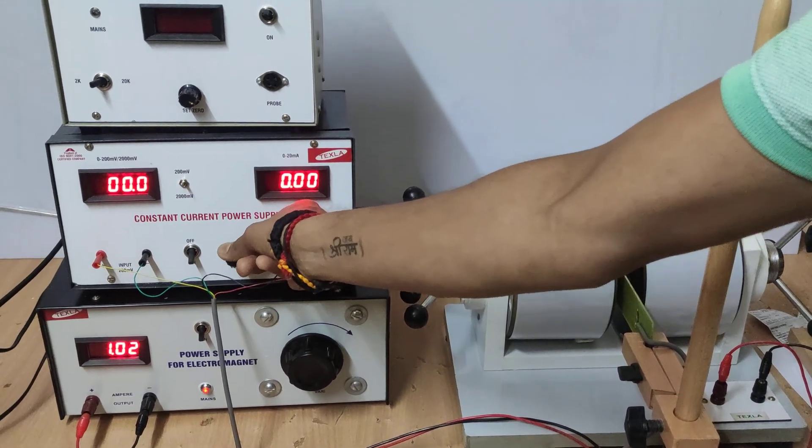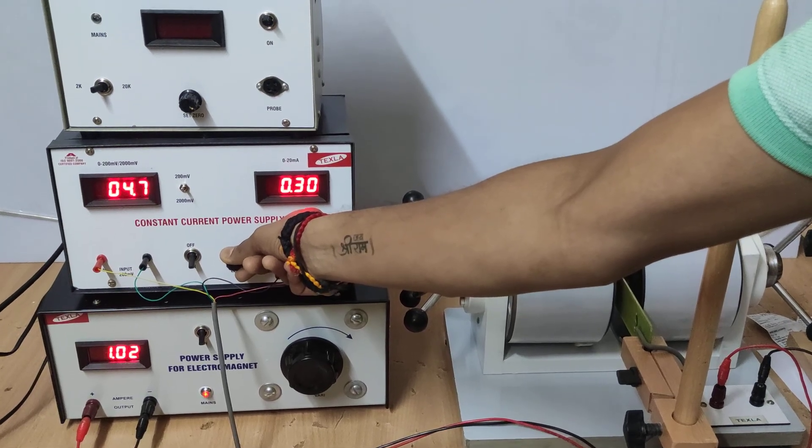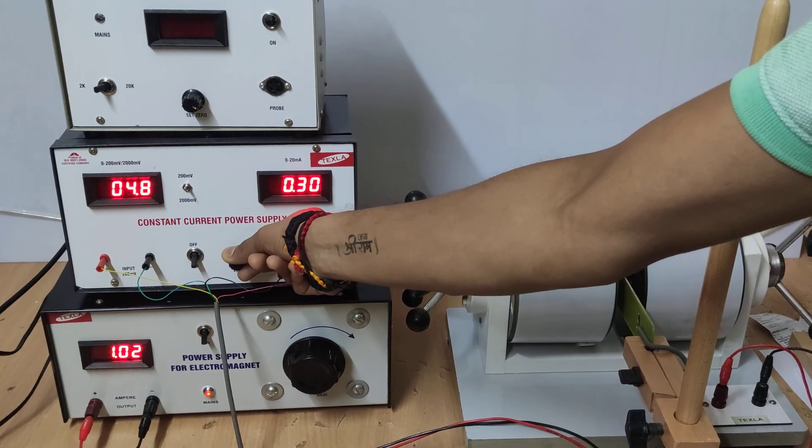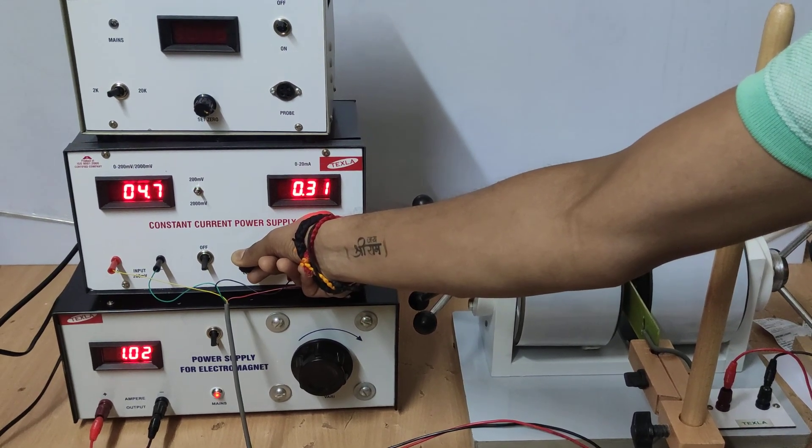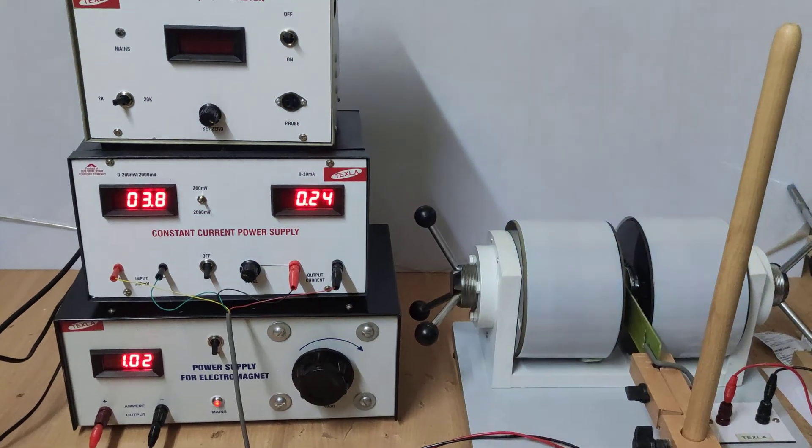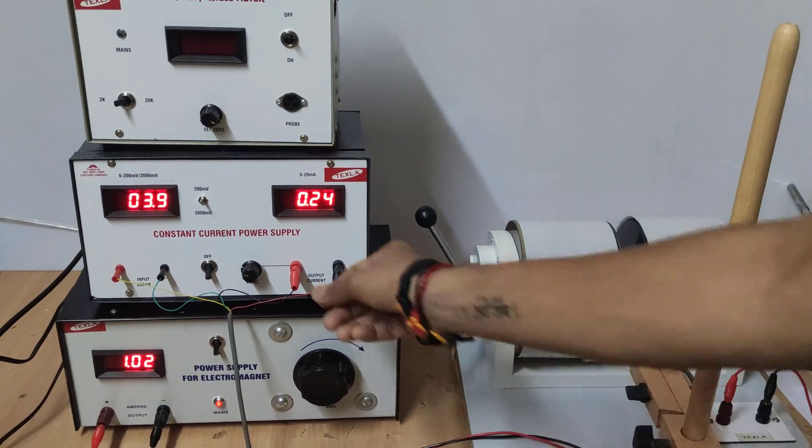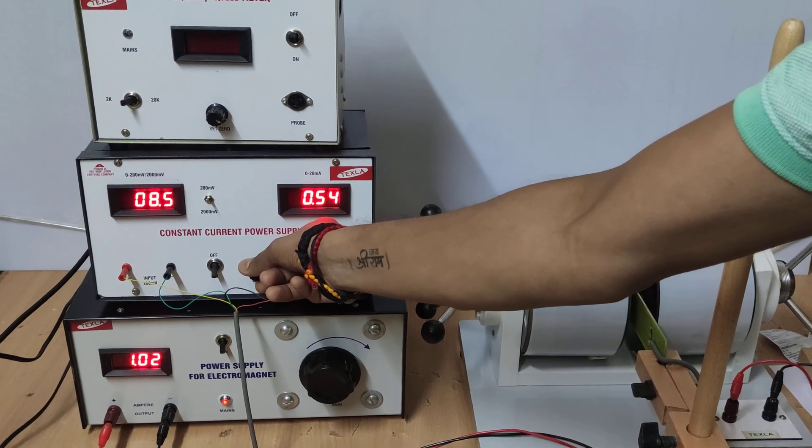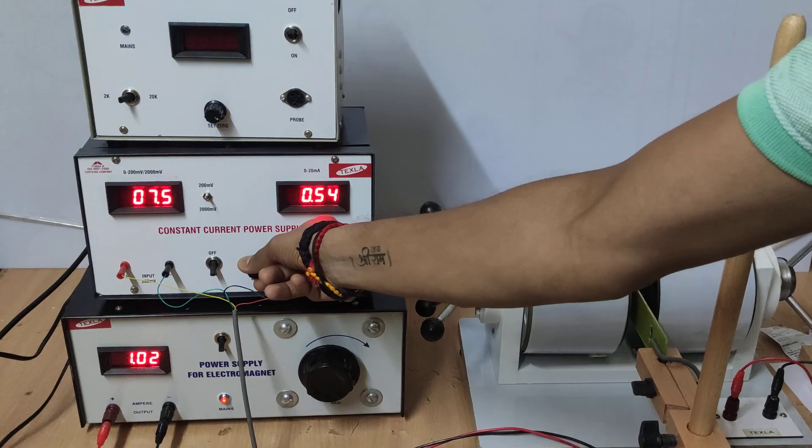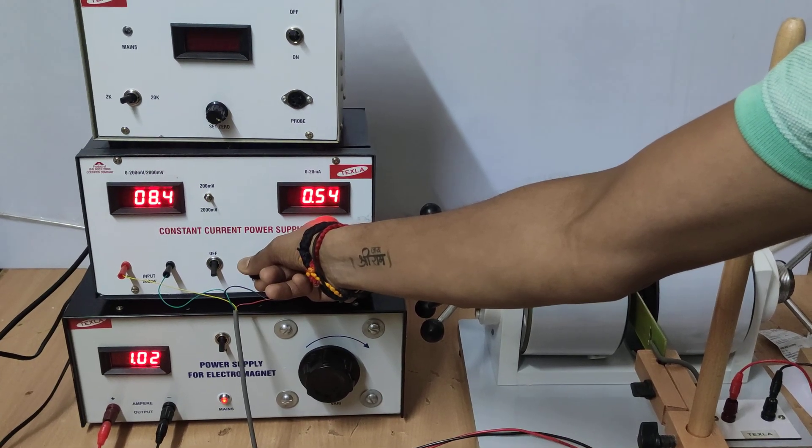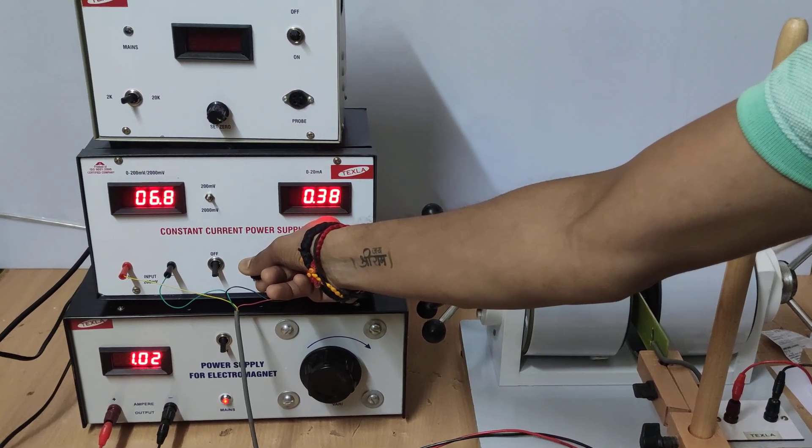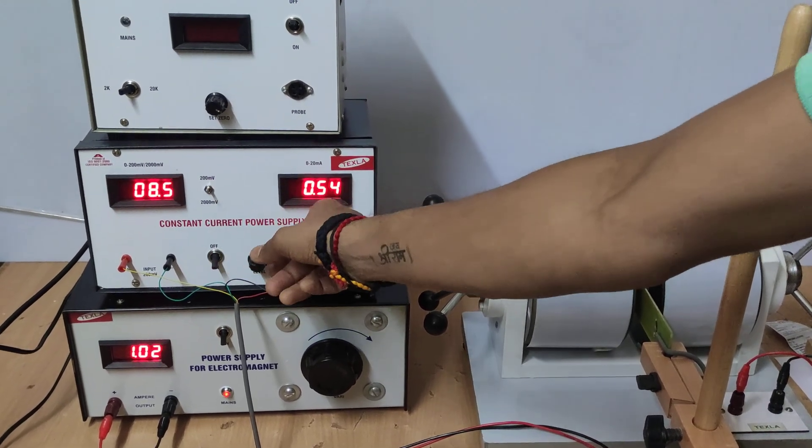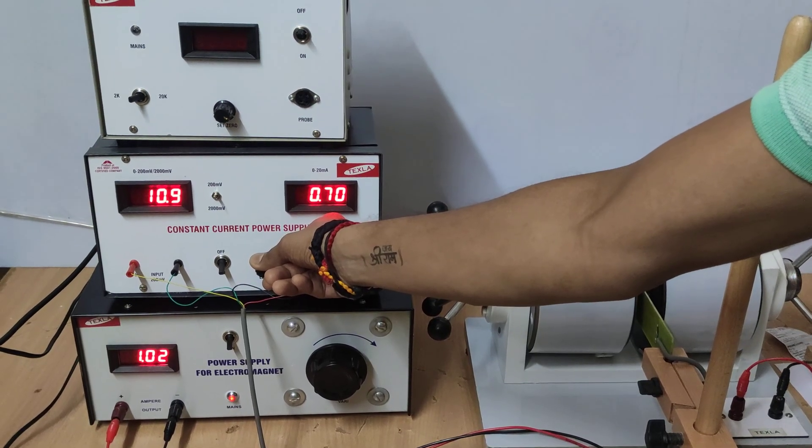I will go in a step of 0.25. For 0.25 that is 3.8 millivolts. For 0.5, 0.55, it is 8.5. For 0.75